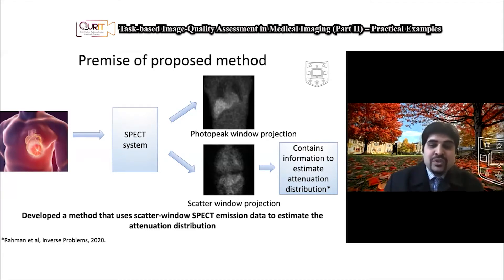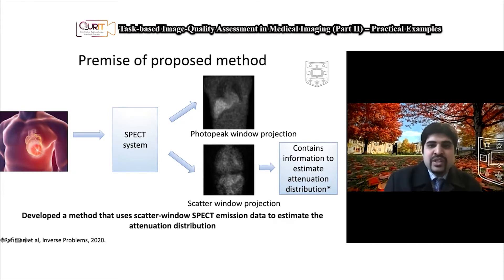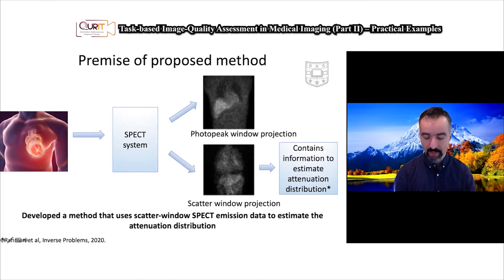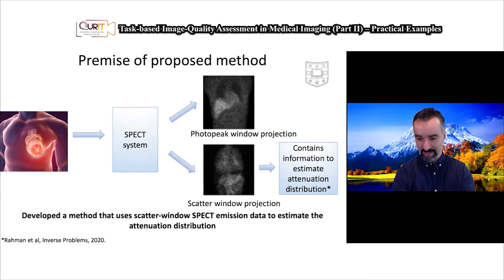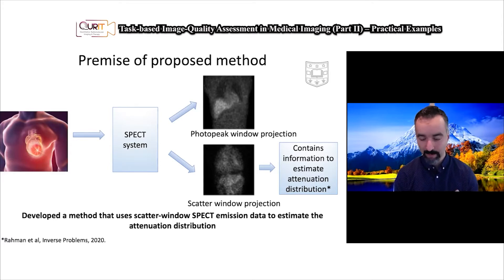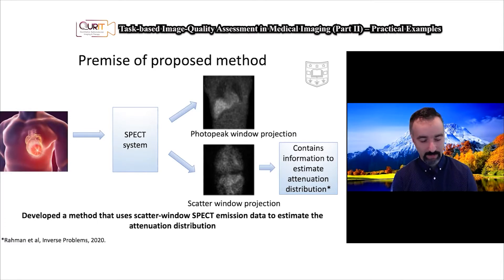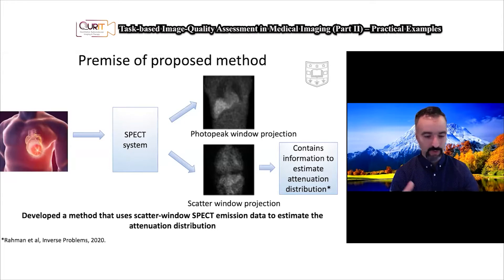We showed theoretically, using a Fisher information based approach, that these scattered photons contain information to estimate the attenuation distribution. We then used a method that uses the scatter window emission data to estimate the attenuation distribution. For those interested in the theory behind how we demonstrated this, I refer you to our publication in Inverse Problems. As noted in this course, people moved away from Chang correction toward CT-based systems, but this work takes a different direction — examining whether information in the lower energy scatter window that we tend to throw away can actually be used.